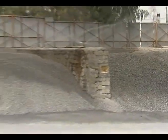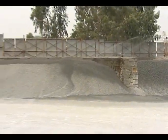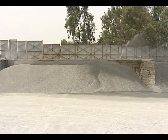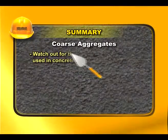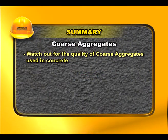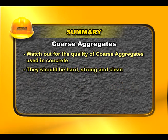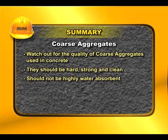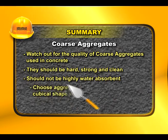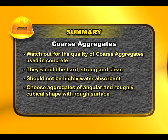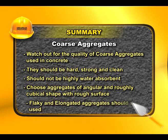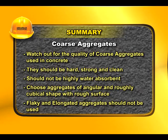Ideally, aggregates of different sizes should be stacked separately for better management. Watch out for the quality of coarse aggregates used in concrete — they should be hard, strong, and clean. They should not be highly water absorbent. Choose aggregates of angular and roughly cubical shape with rough surface. Flaky and elongated aggregates should not be used.